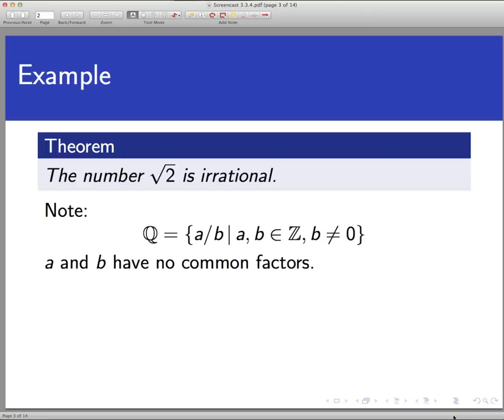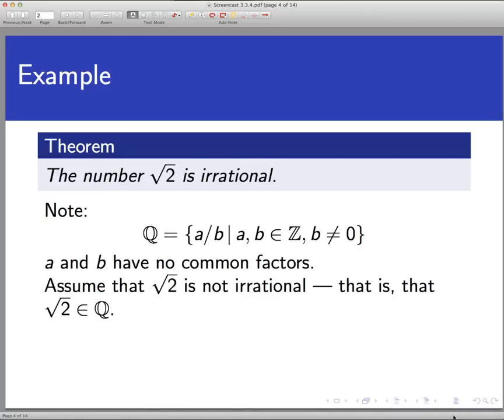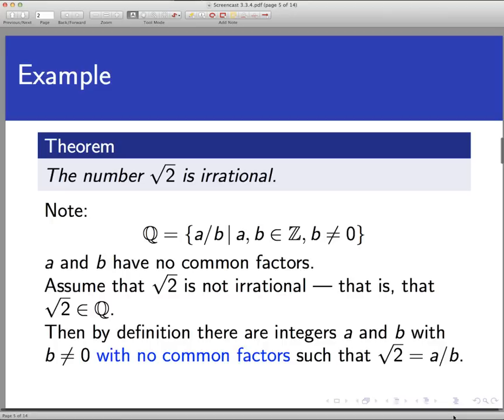So we begin, as always, by assuming the negation of the statement we want to prove. If we want to prove that square root of 2 is irrational, then the negation would be to assume that the square root of 2 is rational, so do that. Now what does this mean? By definition, it means that there exist integers a and b with b not zero, and again, very importantly, a and b have no common factors, so that the square root of 2 equals a divided by b.